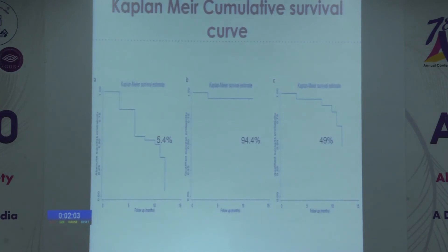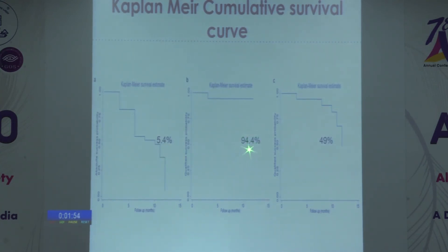Kaplan-Meier survival curves showed an absolute success rate without medications of 5.4% at 1 year, but qualified success with medications was 94% at a target IOP of 18 mmHg. With a target IOP of 14 mmHg, the qualified success rate was 49%, which was quite satisfactory.